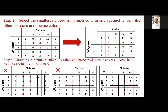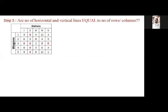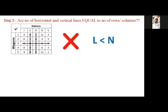Next step: check whether the number of horizontal and vertical lines equals the number of rows. We covered zeros in 3 lines only, so L is not equal to N — L is less than N. In this case, the procedure is: select the minimum of uncut elements from the matrix, subtract it from all uncut elements, and add it at the intersection points.